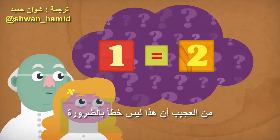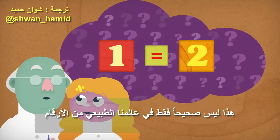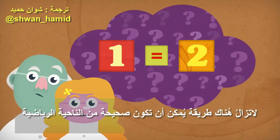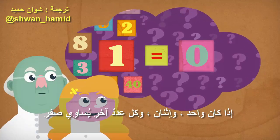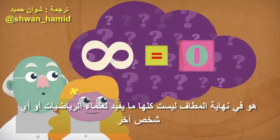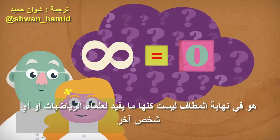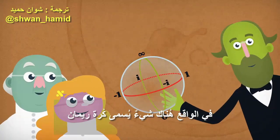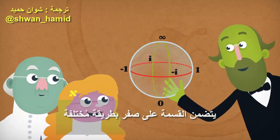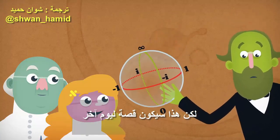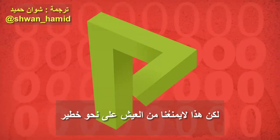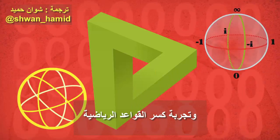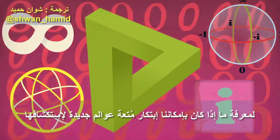Oddly enough, that's not necessarily wrong — it's just not true in our normal world of numbers. There's still a way it could be mathematically valid if 1, 2, and every other number were equal to 0. But having infinity equal to 0 is ultimately not all that useful to mathematicians, or anyone else. There actually is something called the Riemann sphere that involves dividing by 0 by a different method, but that's a story for another day. In the meantime, dividing by 0 in the most obvious way doesn't work out so great. But that shouldn't stop us from living dangerously and experimenting with breaking mathematical rules to see if we can invent fun new worlds to explore.